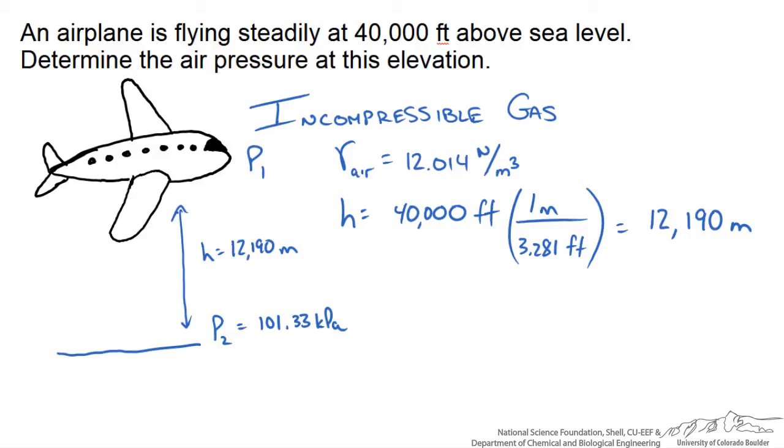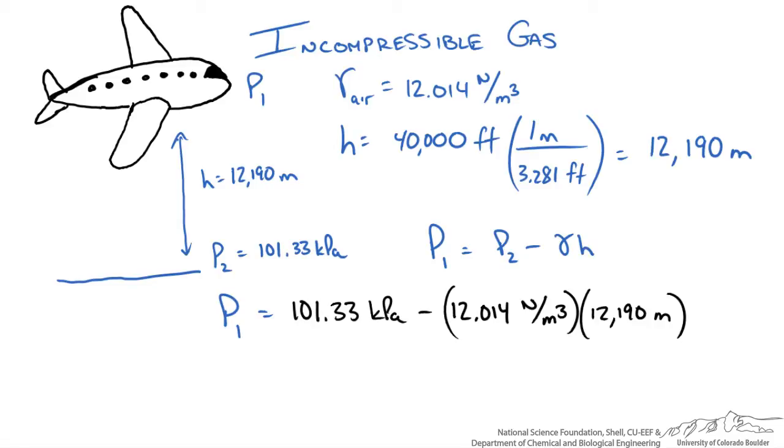So our relationship for the incompressible case is that P1 is going to equal P2, the pressure at the ground, minus the height and specific weight of our fluid above it. So we can plug in some numbers and make sure that our units are the same. We have newtons per meter squared, which is the same as a pascal. We have to divide by 1000 pascals to make sure our units are the same in terms of kilopascals.